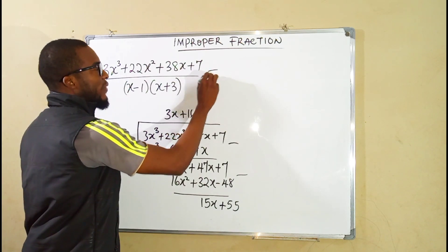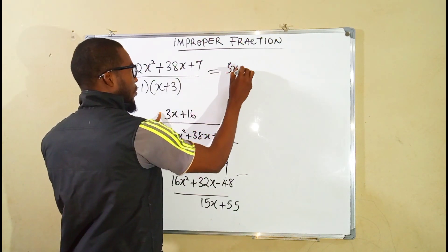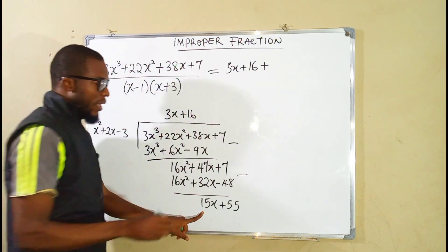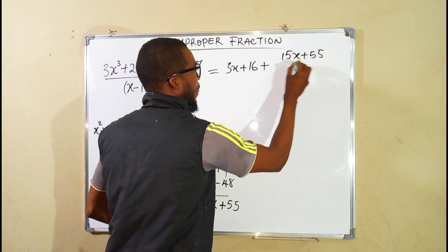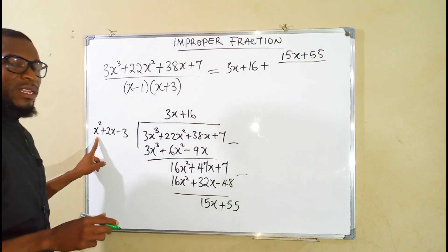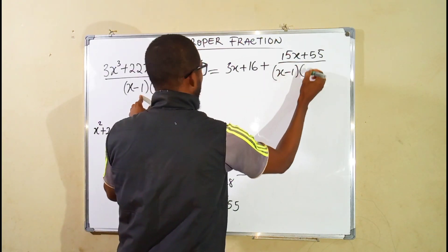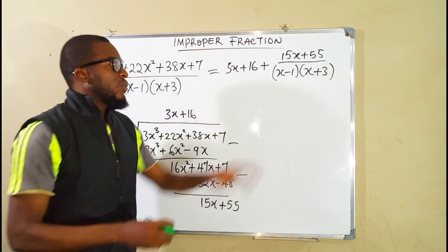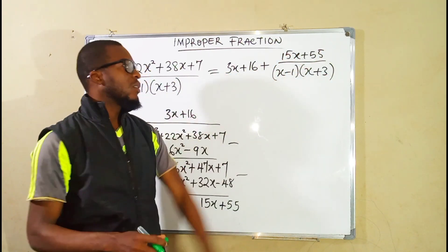So our compound fraction can be reduced into the quotient which is 3x plus 16 plus 15x plus 55 divided by the divisor which is this and it is the same thing as these two factors. So we have x minus 1 and x plus 3. So this is what we have to dissolve into partial fraction. Whatever we get we attach it to 3x plus 16.